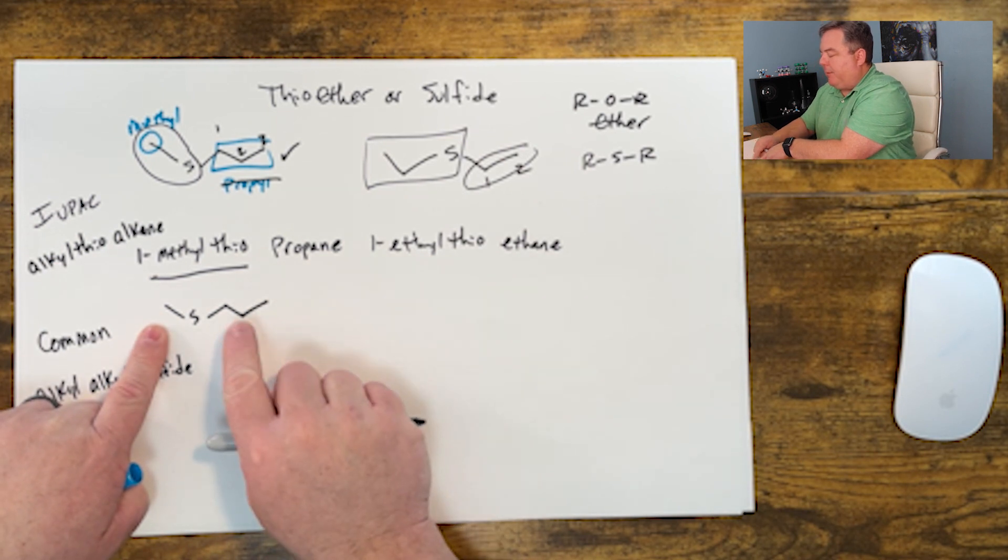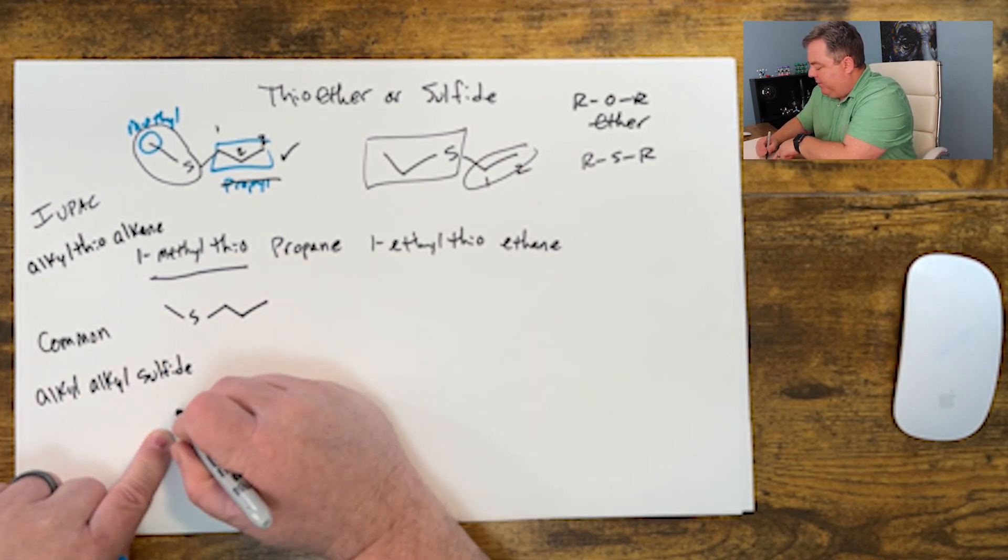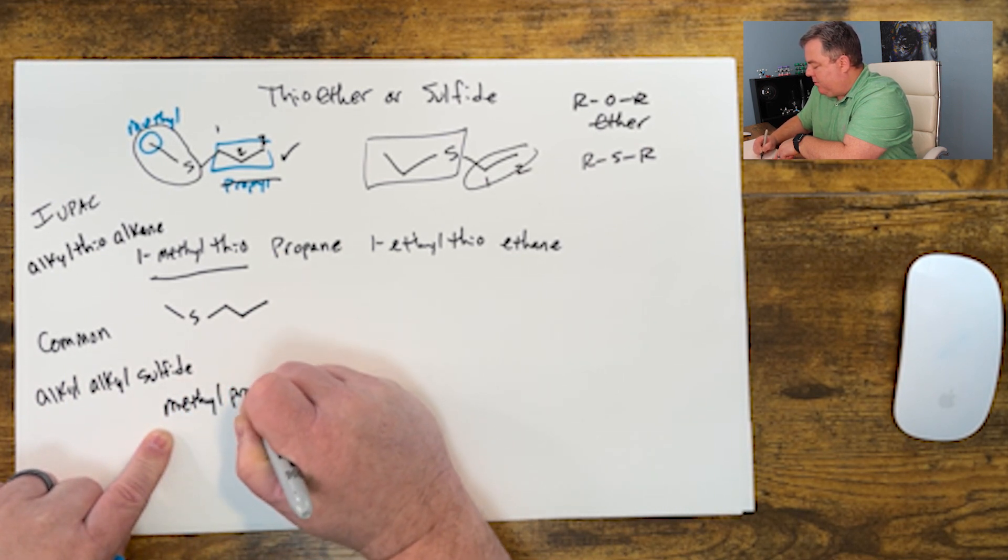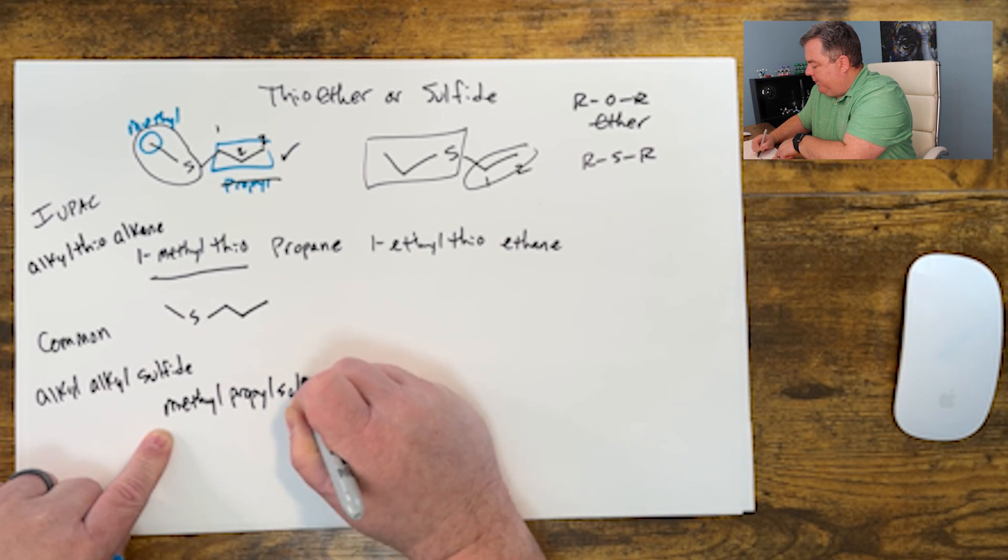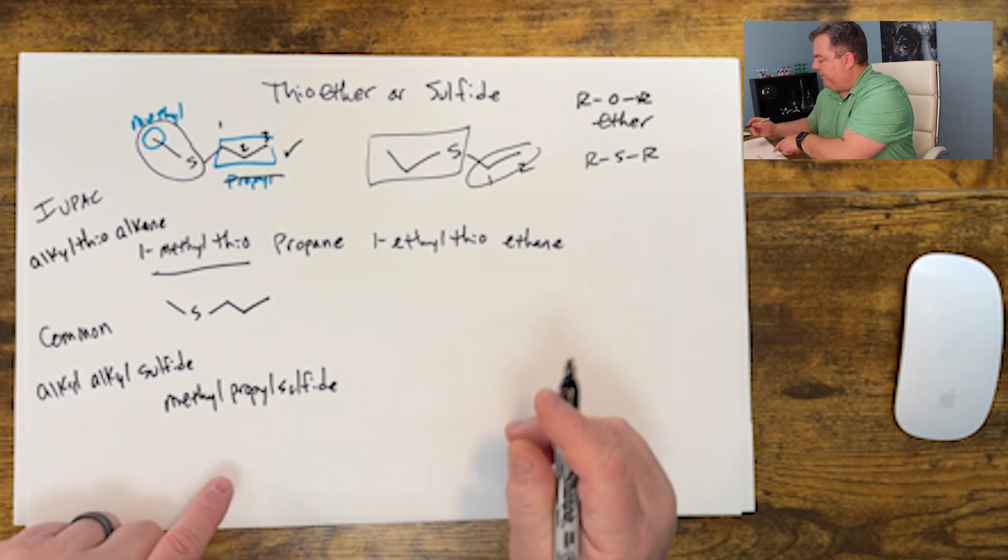So I've got a methyl and a propyl. M comes before P, so this is called methyl propyl sulfide. Just name the two groups on the sulfide.